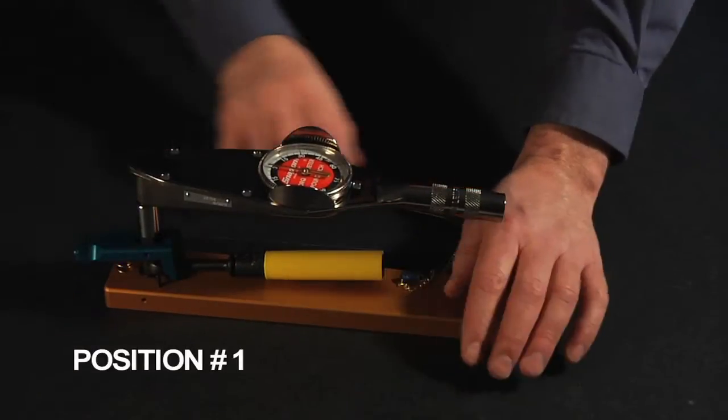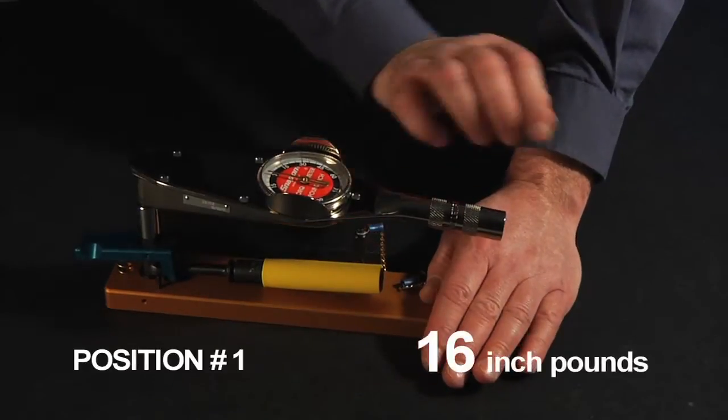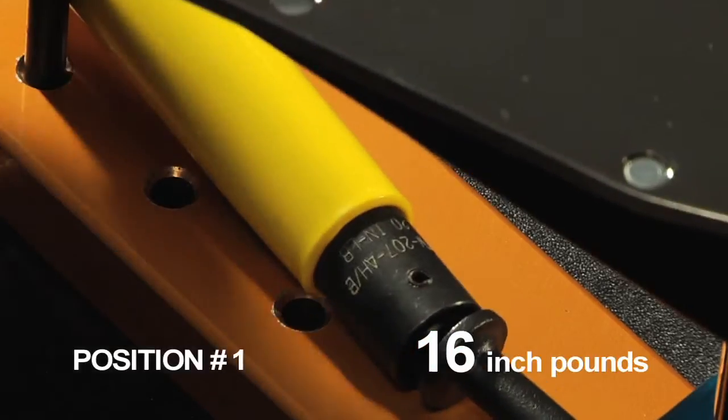The first wrench by one of our competitors provides a torque of 16 inch-pounds when gripped at position one.